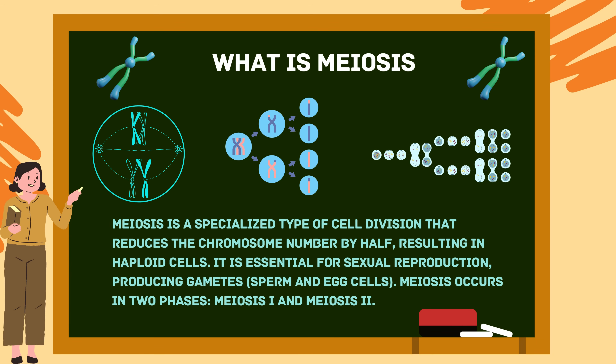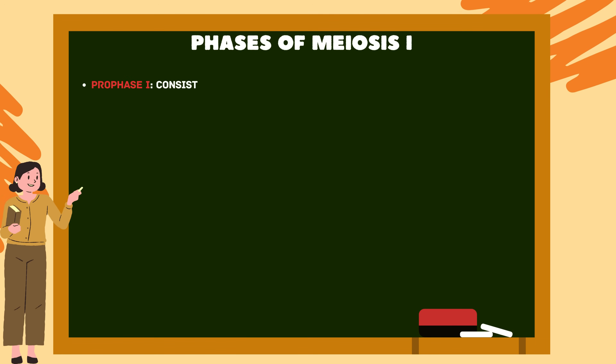Next up — what is meiosis? Meiosis is a specialized type of cell division that reduces the chromosome number by half, resulting in haploid cells. It is essential for sexual reproduction, producing gametes — sperm and egg cells. Meiosis occurs in two phases: meiosis I and meiosis II.